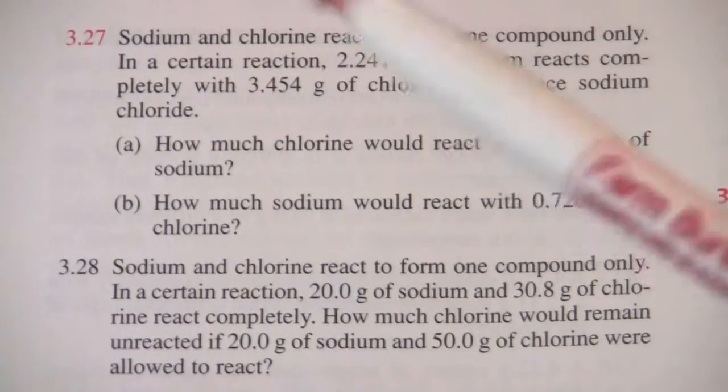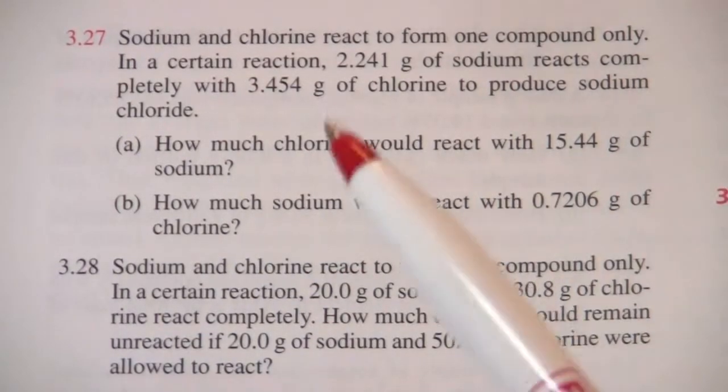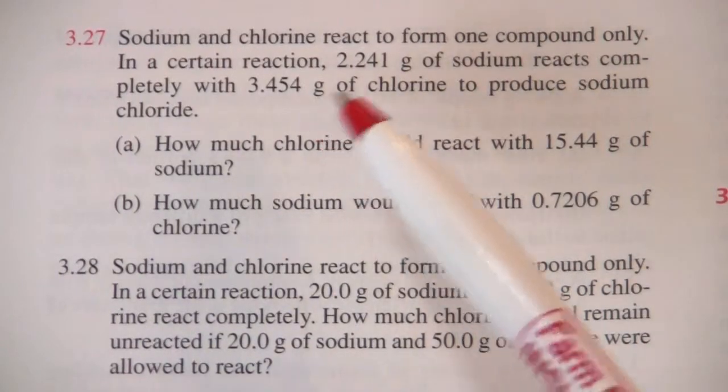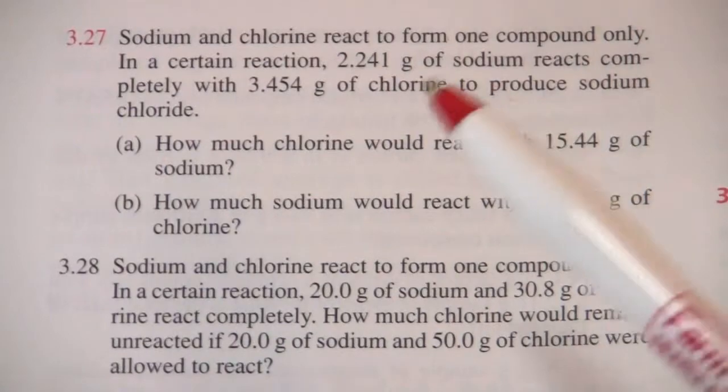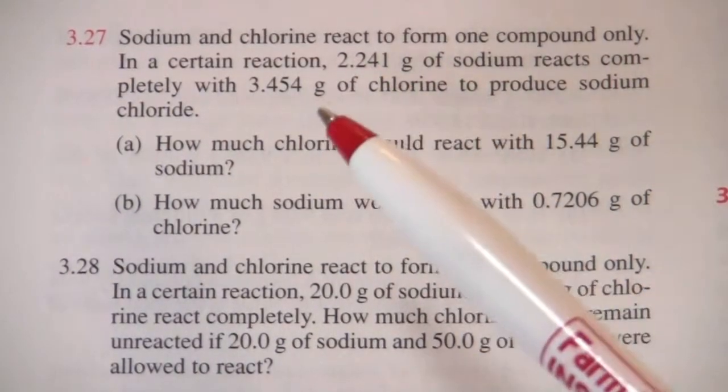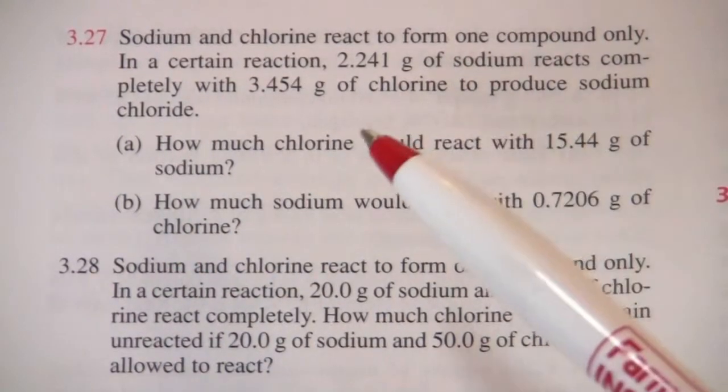Okay, so the way we're going to solve this is we know how much sodium reacts with chlorine. And any time you do a reaction, it's always going to react in that same proportion. It's called the law of constant proportions.